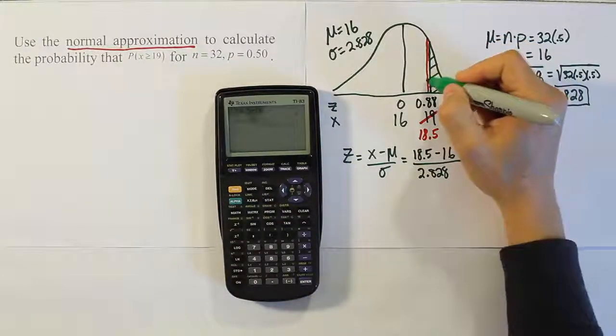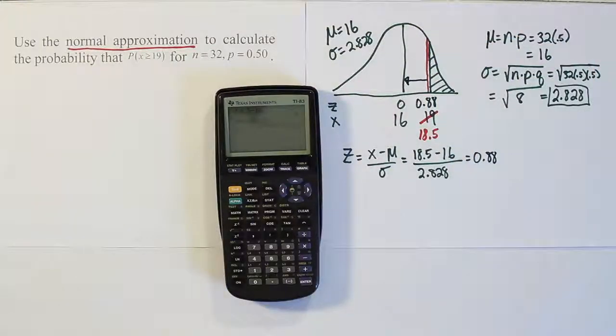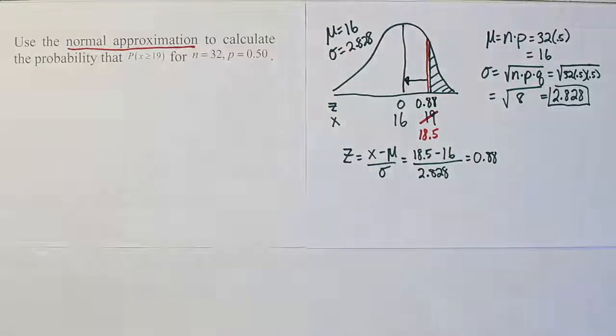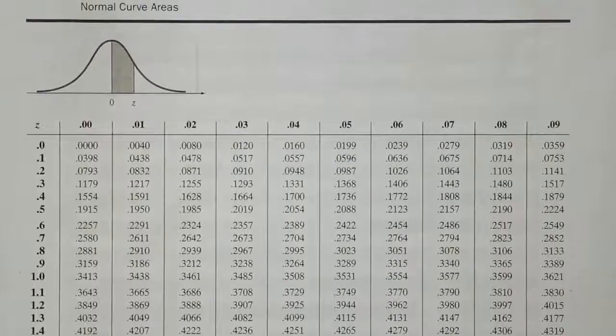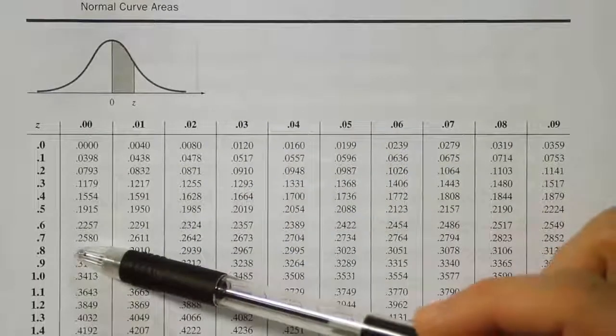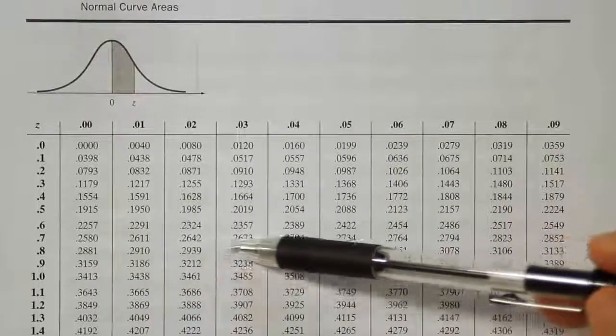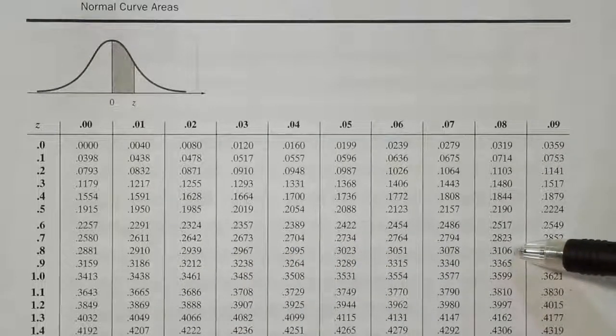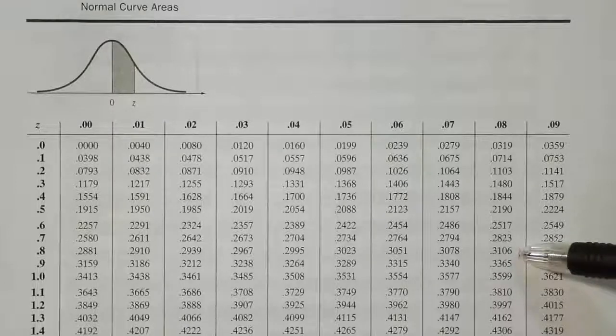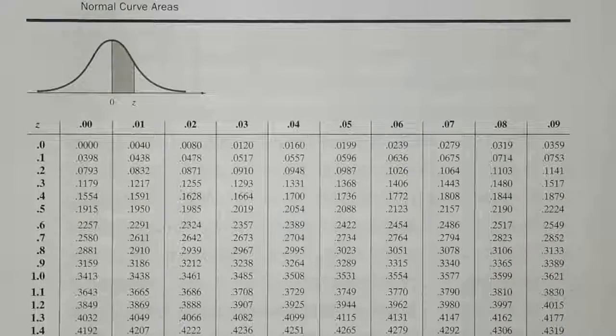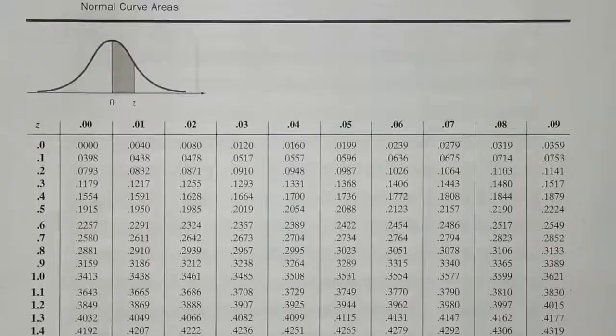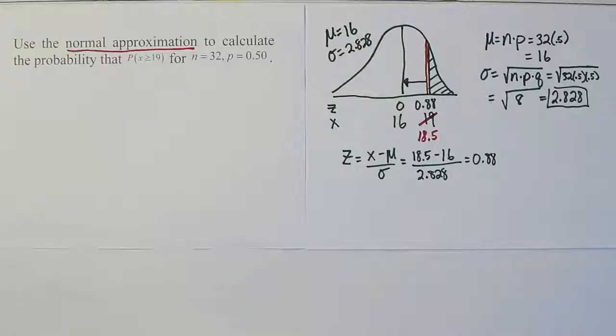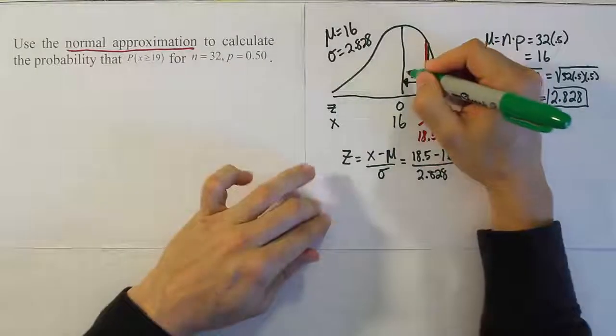That area will be from the center to 0.88, but that's not the area we're looking for, so we'll do 0.5 minus that area to get our final answer for the tail. Looking up 0.88 on the z-table, we get 0.3106.